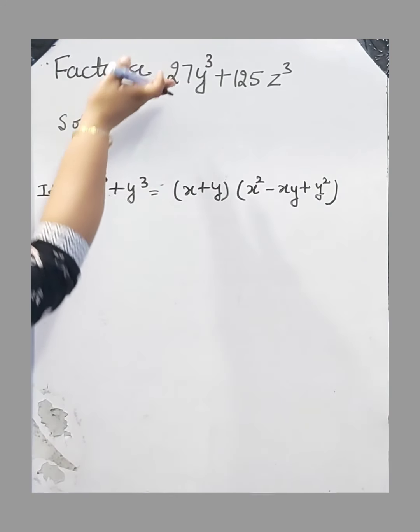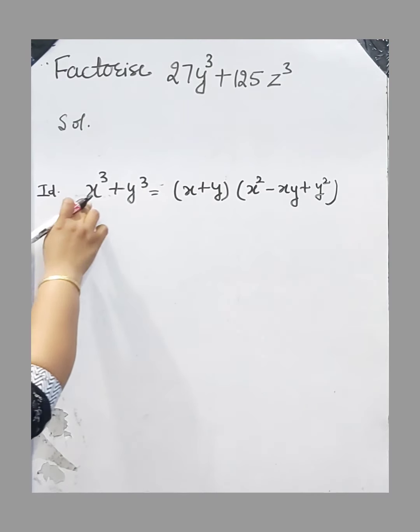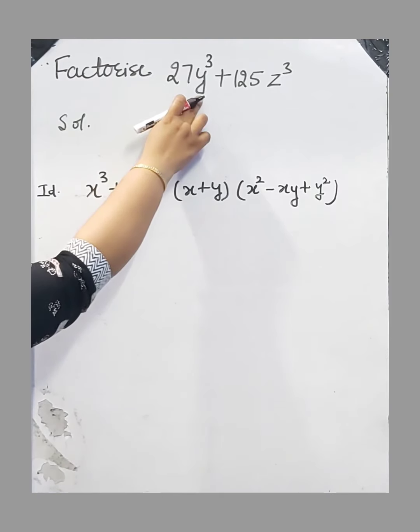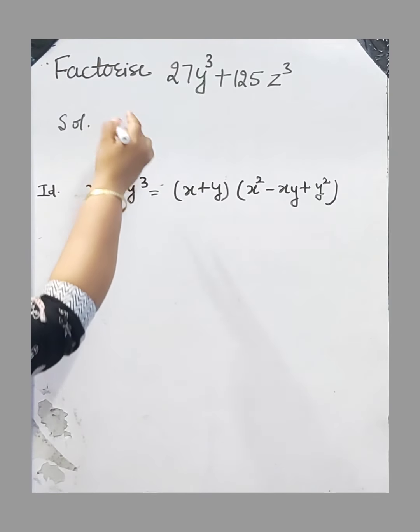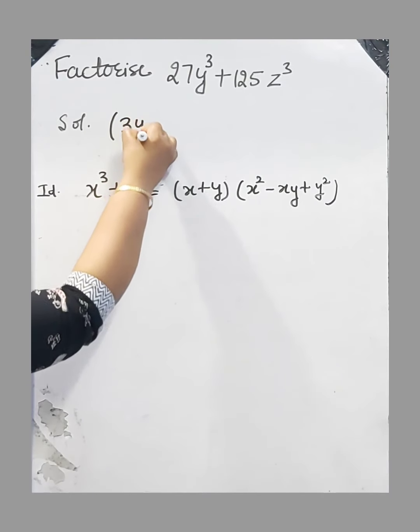We have to apply this identity to factorize this polynomial. According to this identity, first of all, we have to convert 27y³ - this is the whole cube of which term? We know that 27y³ is the whole cube of 3y.